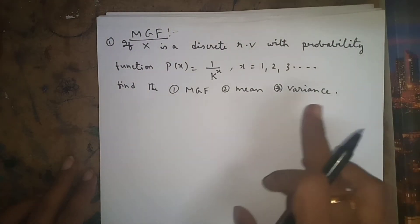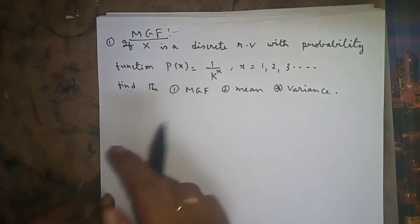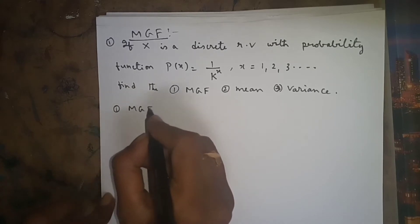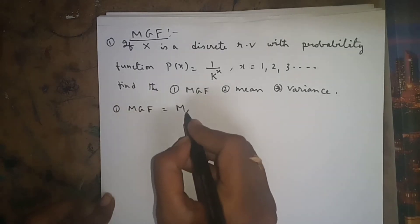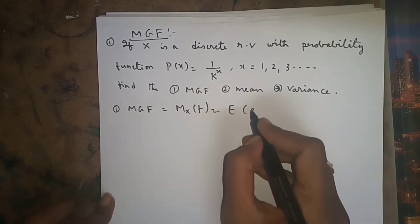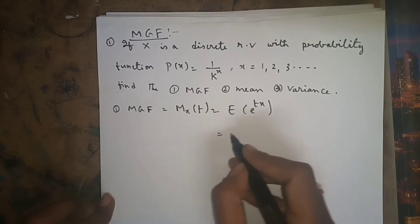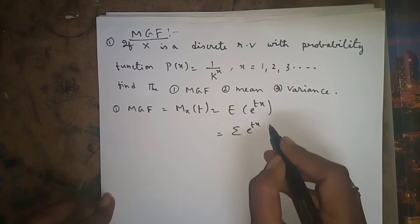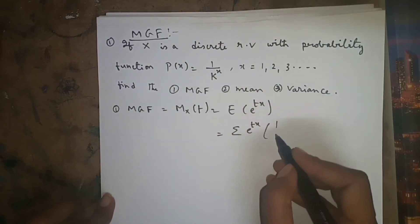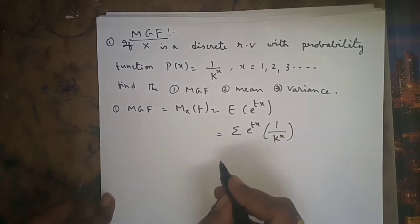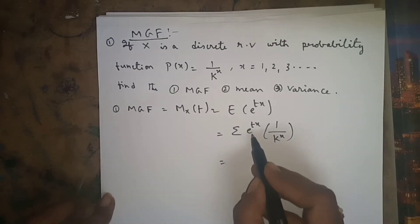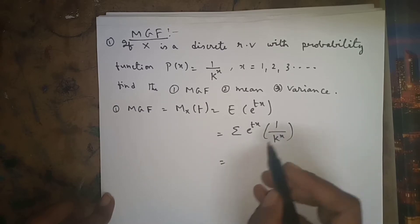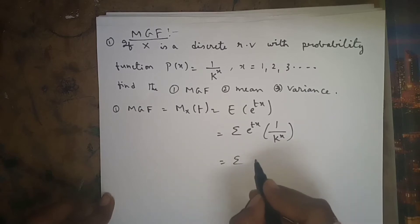Since x takes countably finite number of values, it is a discrete random variable. The MGF formula is M_x(t) = E[e^(tx)], which for a discrete random variable equals sigma of e^(tx) * p(x). Substituting p(x) = 1/k^x, we get sigma of e^(tx) * (1/k^x), which equals sigma of (e^t / k)^x.